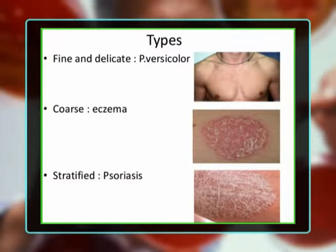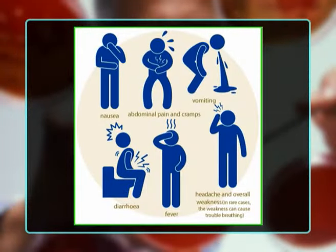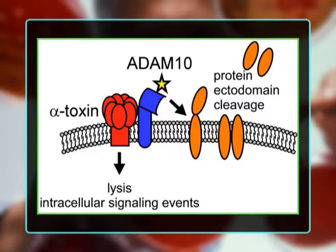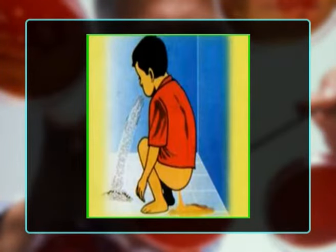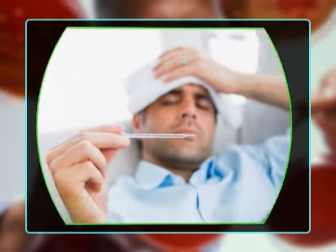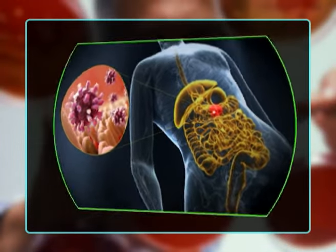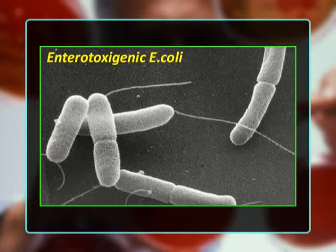Staphylococcus aureus: the source of this infection is humans. The bacteria are often found in small amounts in the nose and on the skin of clinically healthy people; higher amounts can be found in lesions such as infected eczema, psoriasis, or any pus-draining lesion — these people should not be handling food. Food poisoning caused by this bacterium is due to a heat-resistant enterotoxin, resulting in diarrhea, vomiting, cramps, and fever. Symptoms start suddenly and usually disappear within 24 hours.